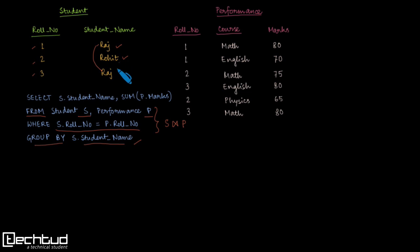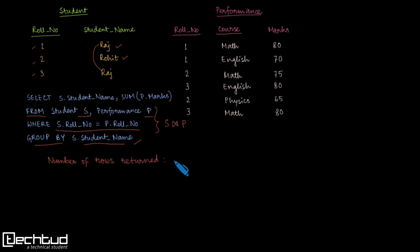We have only two different names: Raj and Rohit. So when this query is run, the final question asks for the number of rows returned by this query. The answer will be two because we have only two distinct student names.